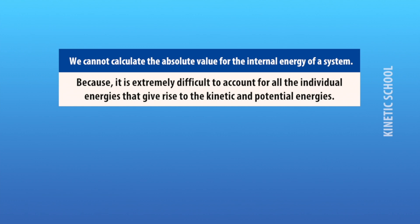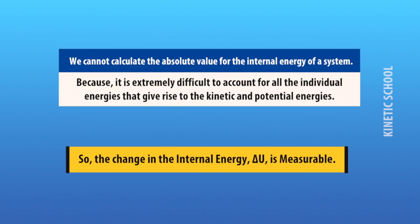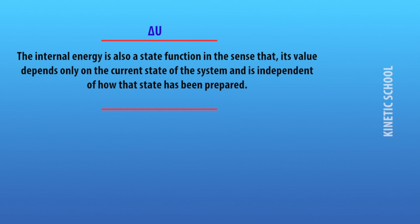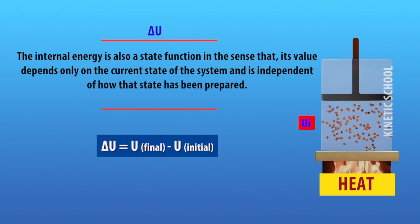We cannot calculate the absolute value of the internal energy of a system because it is extremely difficult to account for all the individual energies that give rise to the kinetic and potential energies. Therefore, the change in internal energy is what is measurable. Internal energy is also a state function, meaning its value depends only on the current state of the system and is independent of how that state has been prepared.